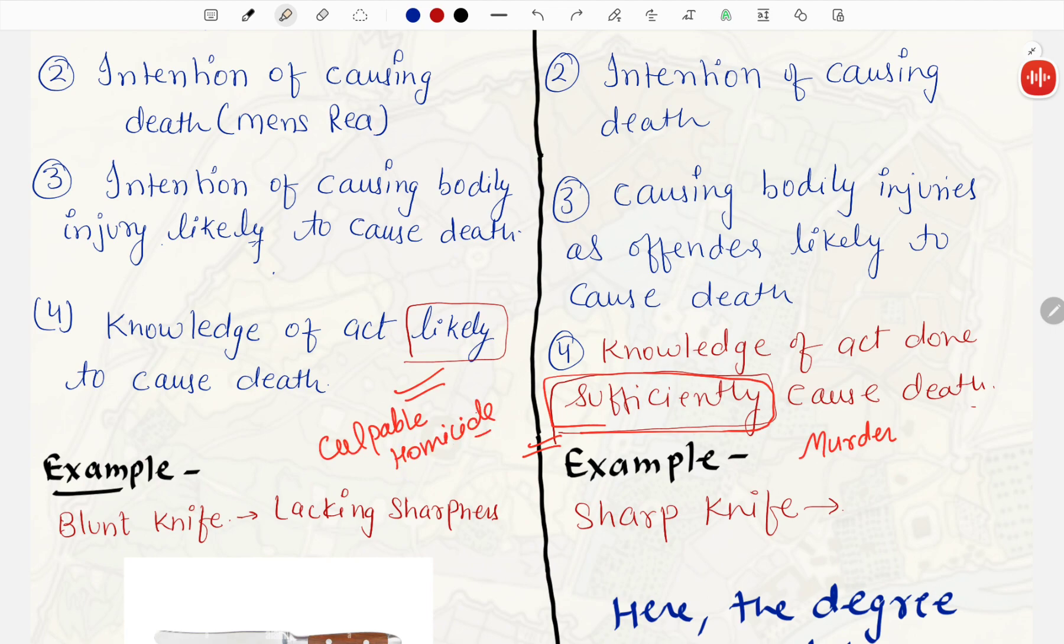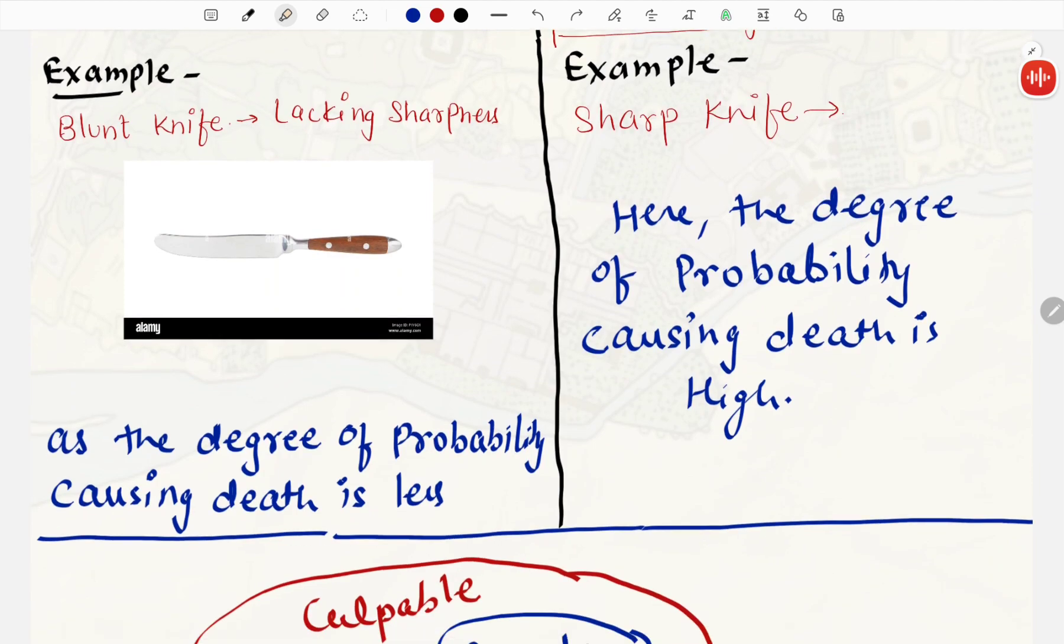Isko ek example ke tarah samajhte hai. If we use a blunt knife, a knife jiske andar sharpness nahi hai, ek mota chapta sa knife hai, jis se pata hai ki isse death nahi hogi, penetrate nahi kar paayenge body ke andar. And if we attack with this blunt knife, the degree of probability causing death is less. But if penetrate nahi kar paayega, ye knowledge hone ke baad bhi, us aadmi ke death ho gai, because some nerves or koi point, pin point, par touch ho gaya, jiske andar, uske death ho gai. This act comes under culpable homicide.